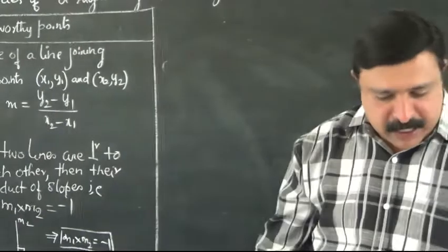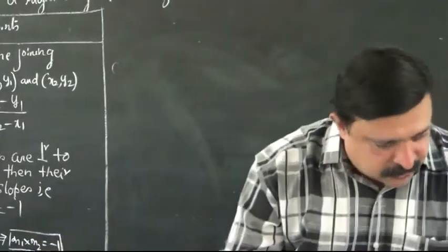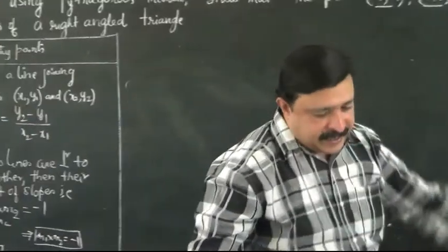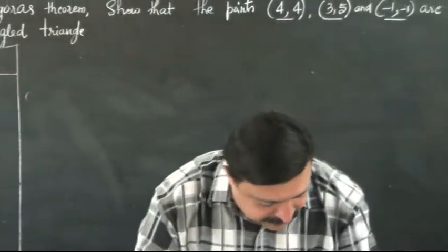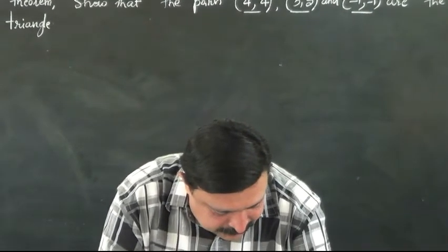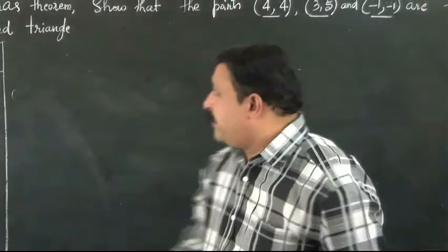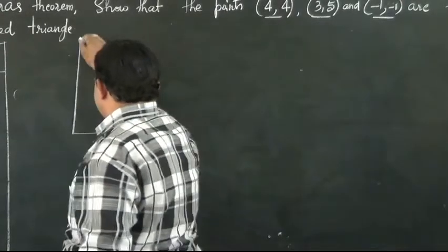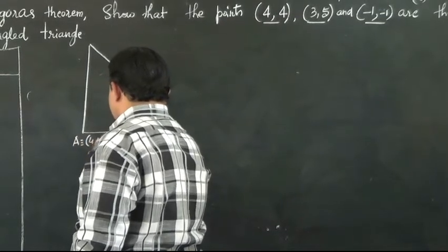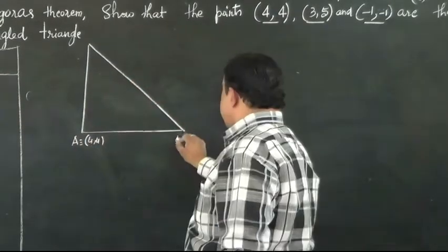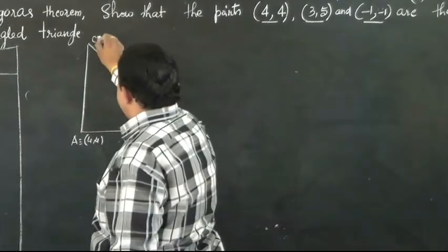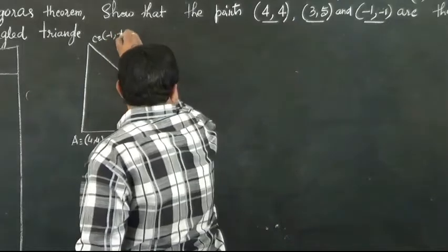First let's mark down the right-angled triangle. Let's name the right-angled triangle as ABC. Take the point A as (4,4), B as the point (3,5), and C as the point (-1,-1).